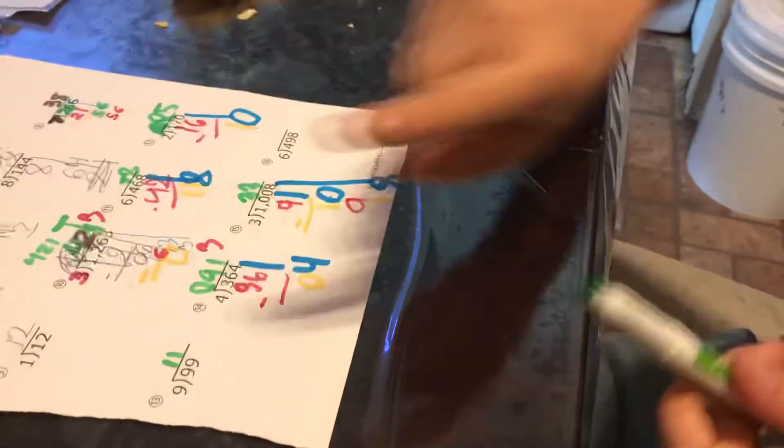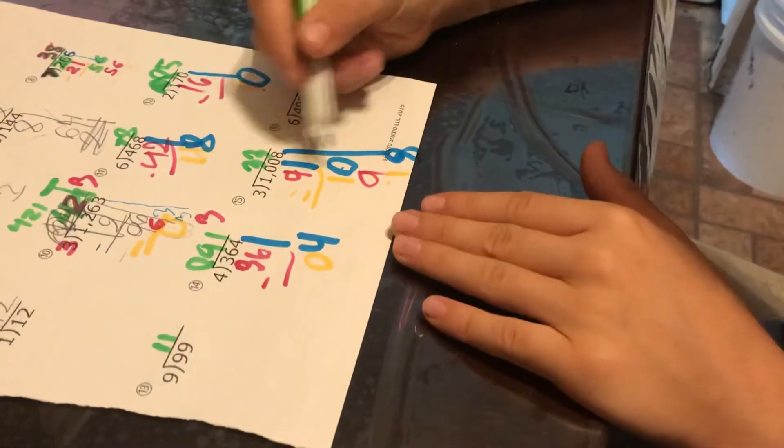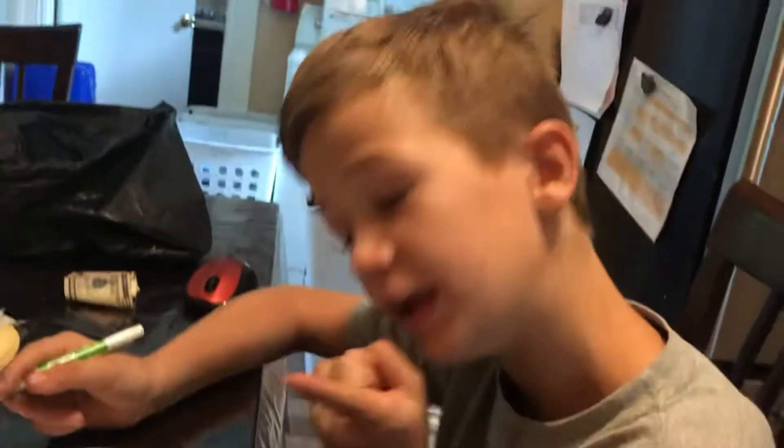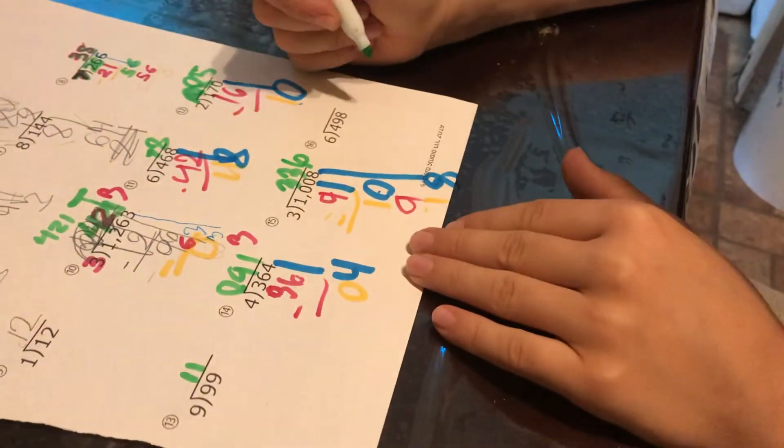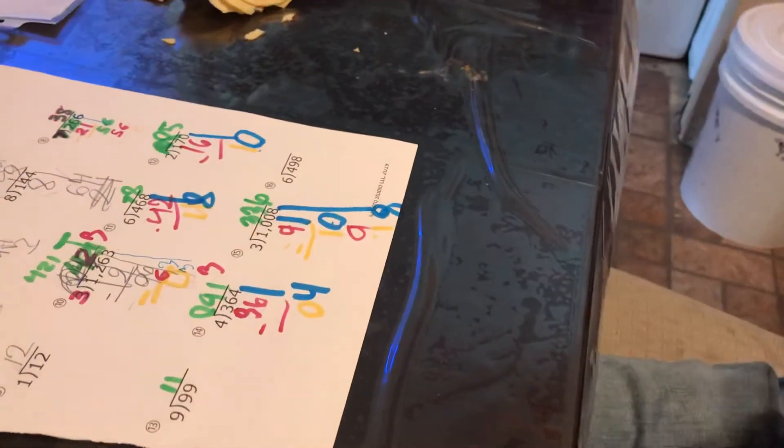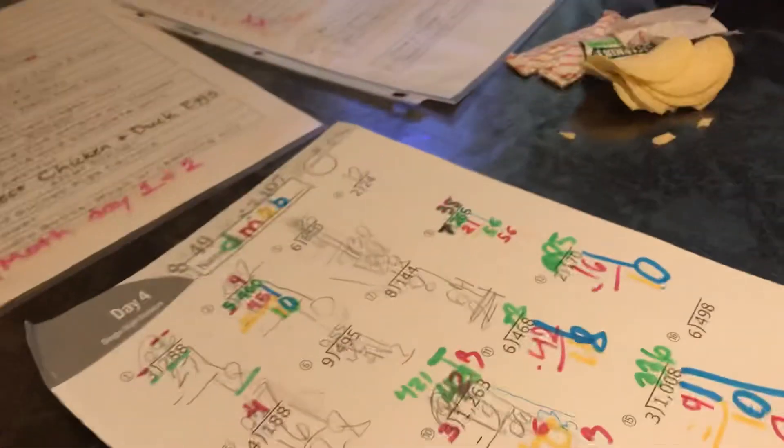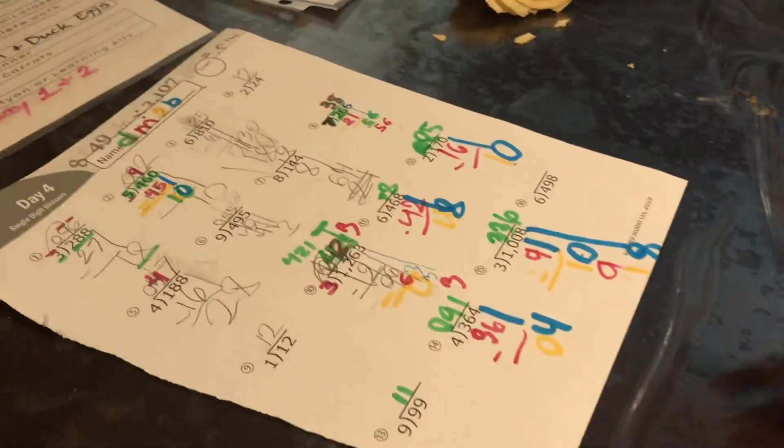And then you gotta bring down the eight, yes. So then the answer is 18, and then you divide 18 divided by 3 which equals 6. And where do you write it? Up here, yes. So good Jeff, very good.